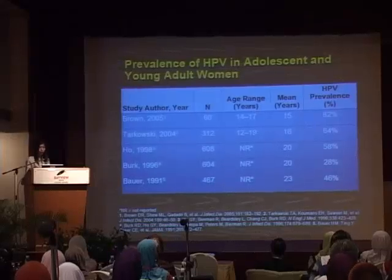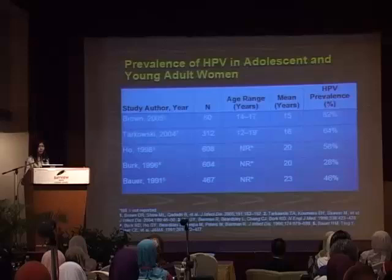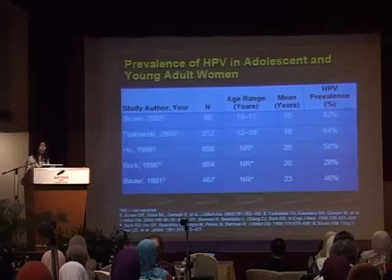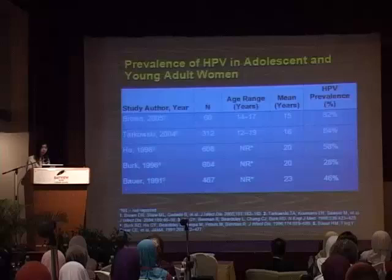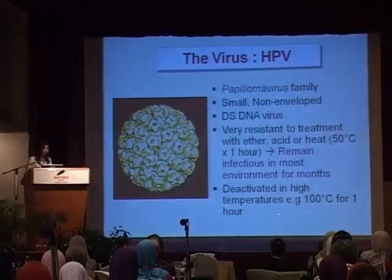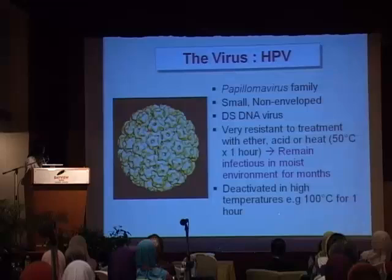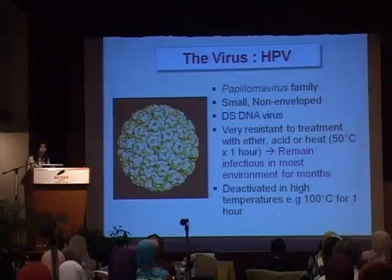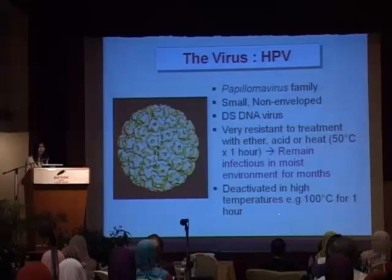In those who are less than 20 years of age, the prevalence is between 65 to 82%. So what is HPV? It is a papillomavirus — a small, non-enveloped double-stranded DNA virus which is very resistant to treatment with ether and acid.